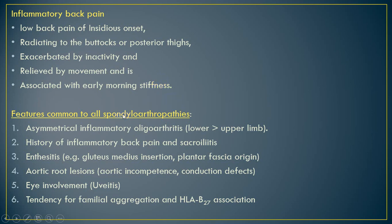To summarize, features common to all types of Spondyloarthropathy are: (1) asymmetrical inflammatory oligoarthritis, (2) history of inflammatory back pain, (3) enthesitis or dactylitis, (4) familial cause with HLA-B27 association. Eye involvement — mostly uveitis — is common in all disorders. All could also present with aortic valve involvement leading to aortic valve incompetence or conduction defects.